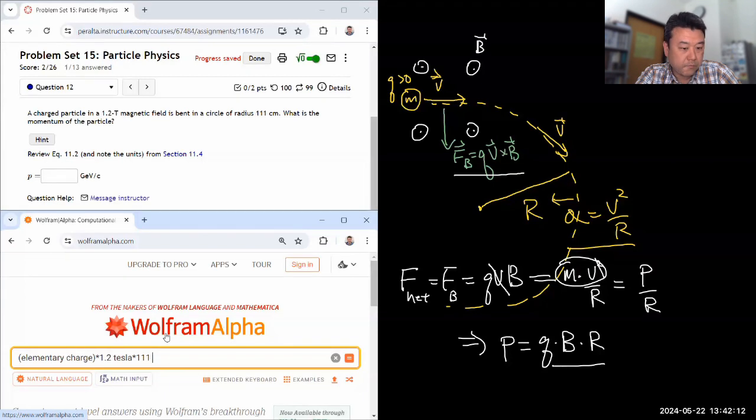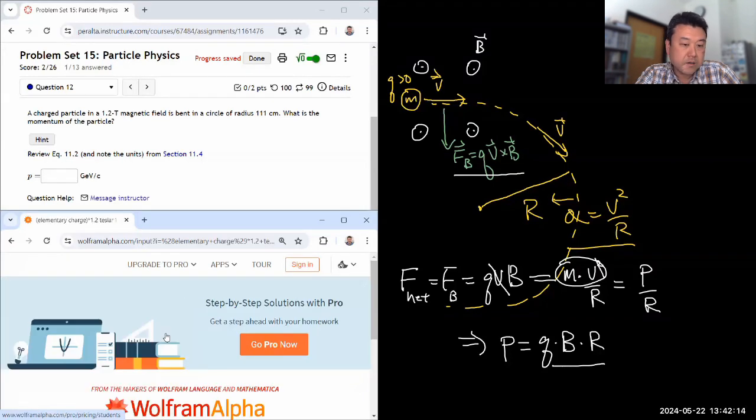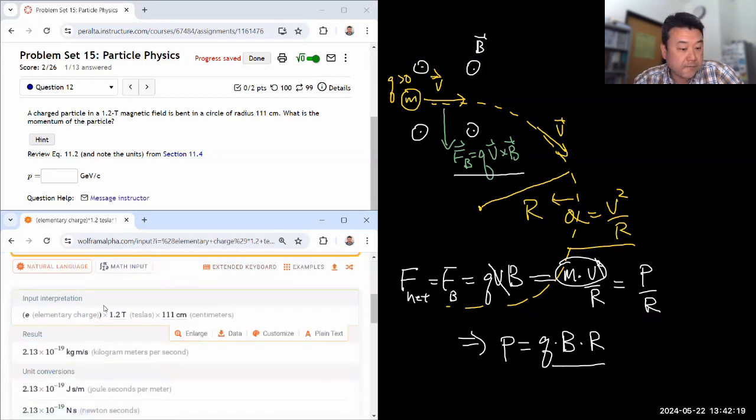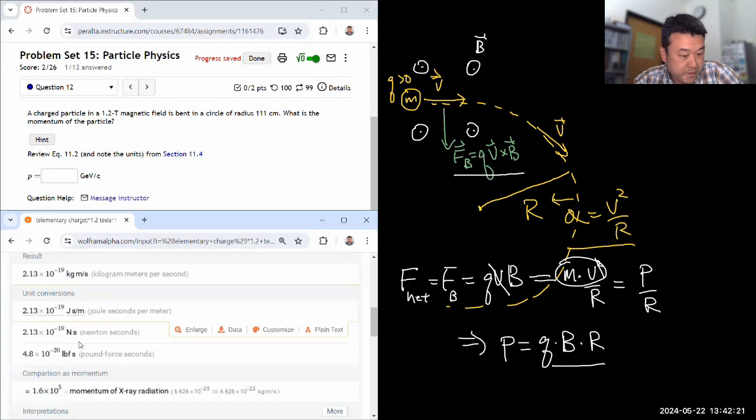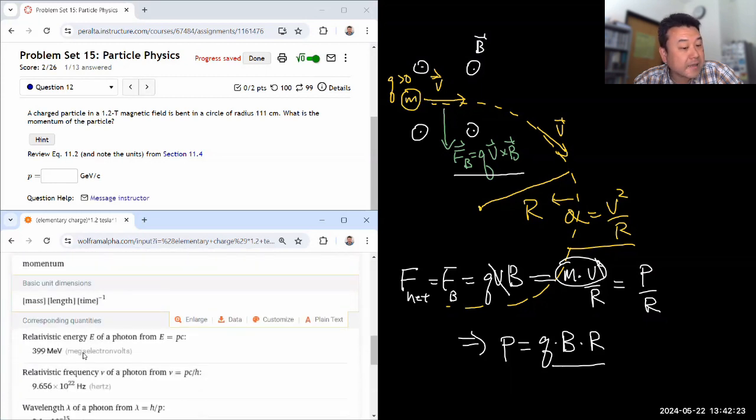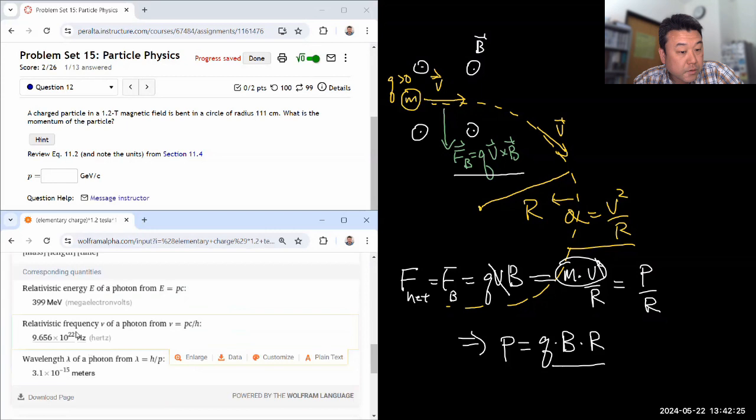Yeah, I think we're going to be fine. So elementary charge times the magnetic field 1.2 tesla times the radius 111 centimeters. So it should have a unit of momentum and it'll give the answer to me in a few units.